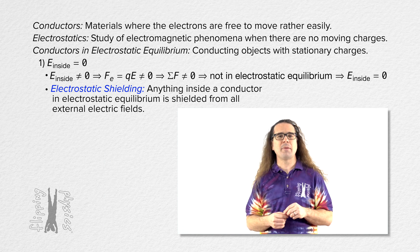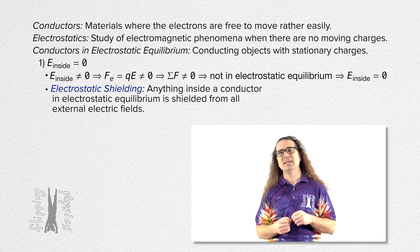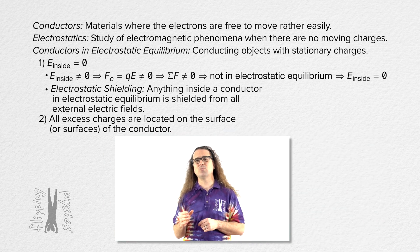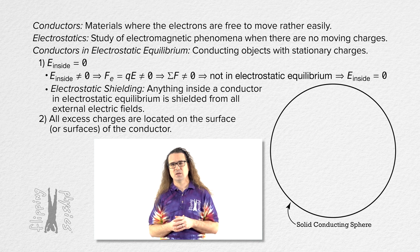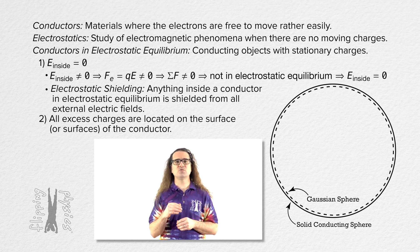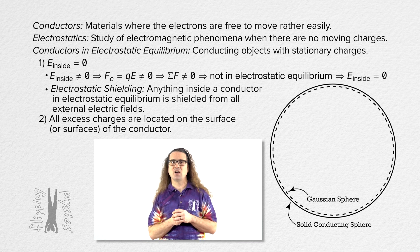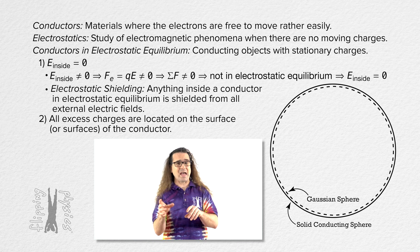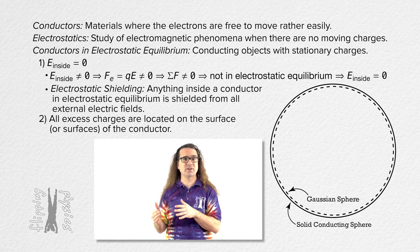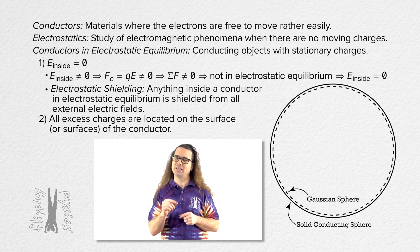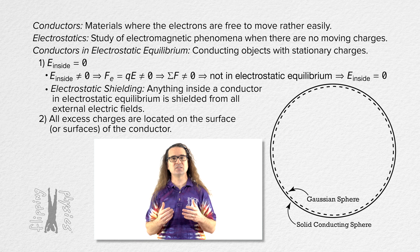The second thing you need to remember about conductors in electrostatic equilibrium is that all excess charges are located on the surface of the conductor. To prove this, let's do an example with a solid conducting sphere. Let's draw a Gaussian surface in the shape of a sphere which is concentric with the solid spherical conductor, but with a radius that is a little bit smaller than the radius of the solid spherical conductor. The difference in spherical radii is exaggerated in the illustration so you can actually see the Gaussian sphere; remember, the Gaussian sphere is only a tiny bit smaller than the solid conducting sphere.